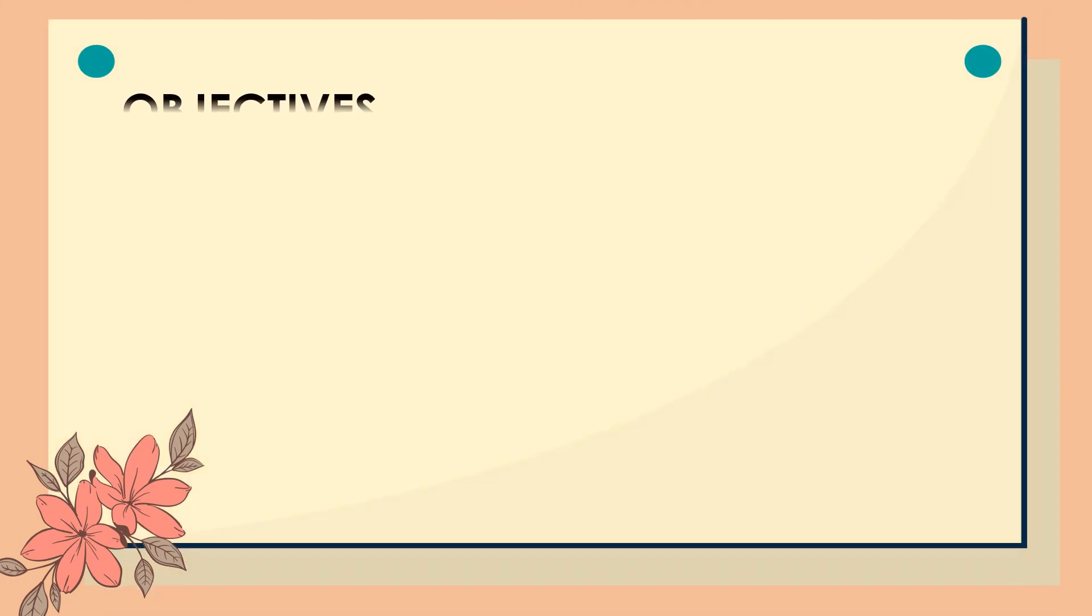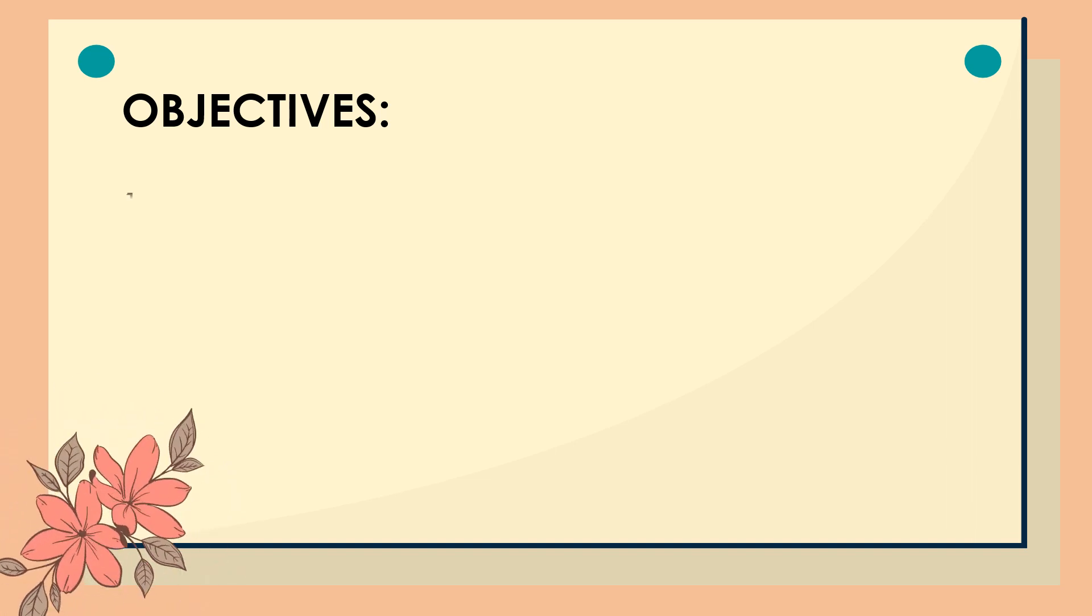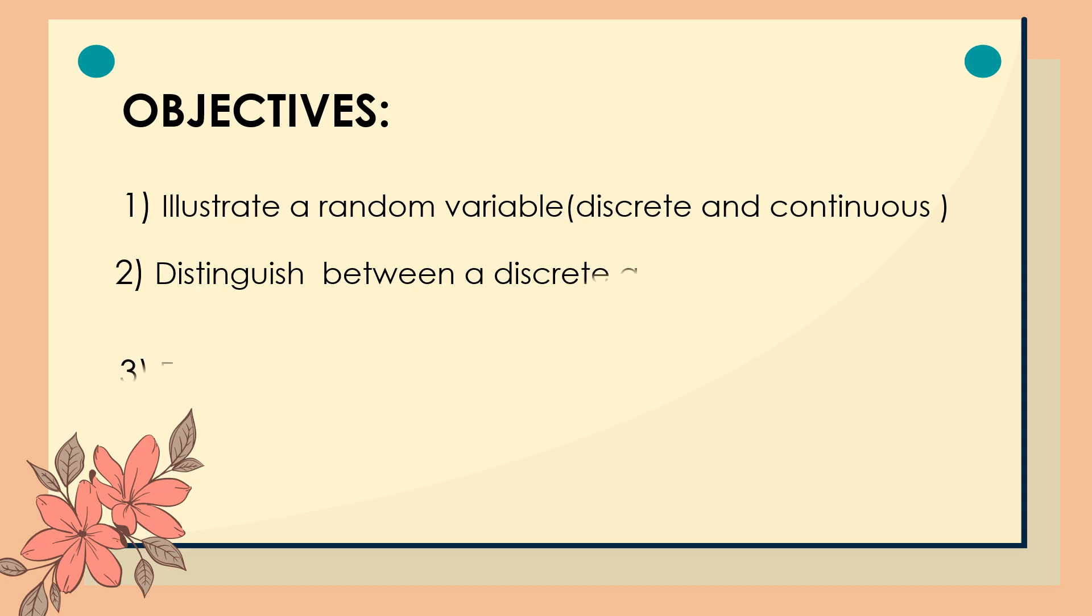What are the objectives of today's lesson or the most essential learning competencies in focus? Number one, illustrate a random variable. Number two, distinguish between a discrete and a continuous random variable. And number three, find the possible values of a random variable.